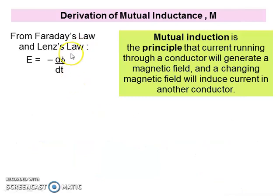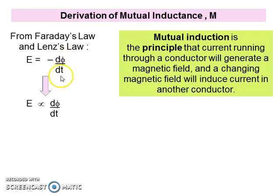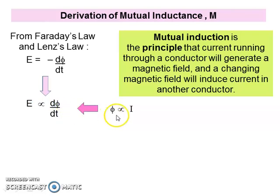From Faraday's Law and Lenz's Law, we have EMF induced equals negative dψ/dt, where dψ is the magnetic flux and t is time taken. This means that the EMF induced is directly proportional to dψ/dt, and magnetic flux is also directly proportional to the current.